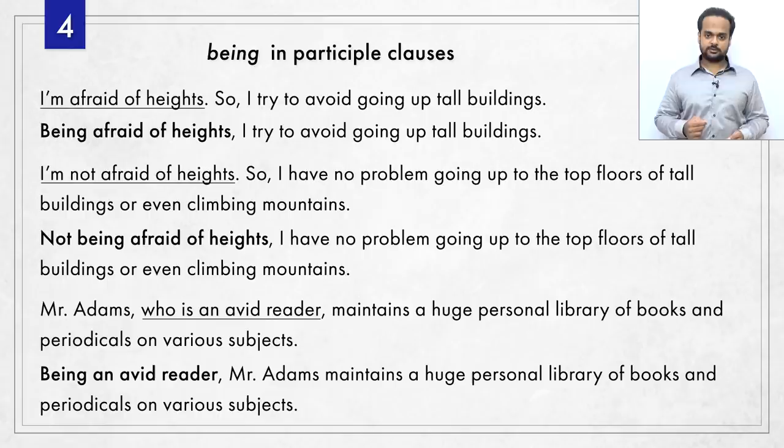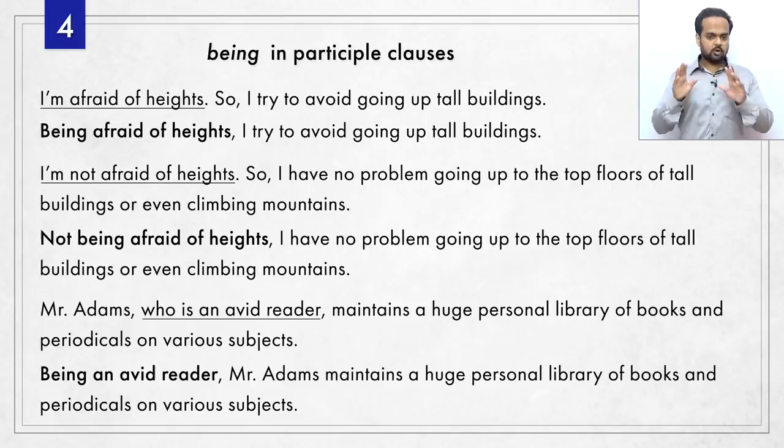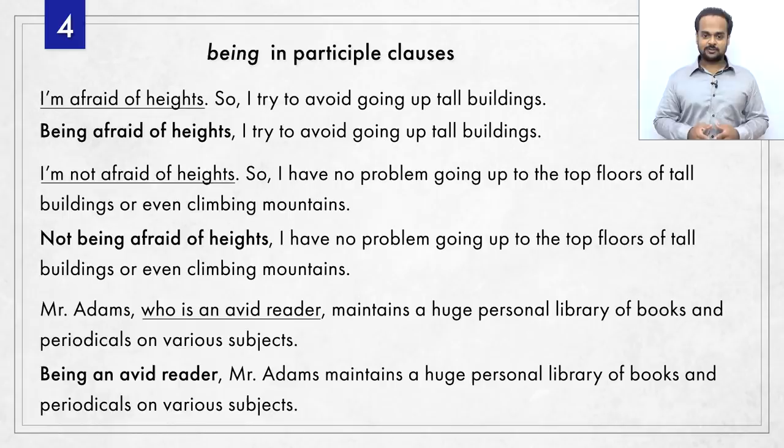Notice how the relative clause with 'who' interrupts the sentence to give information about the noun Mr. Adams. In the same way, the participle clause with being comes in the middle of the sentence and gives information. But the advantage is that you can move it to the beginning: being an avid reader, Mr. Adams maintains a huge personal library. You might wonder whether you can move 'being afraid of heights' to the middle — you can say 'I, being afraid of heights, try to avoid tall buildings,' but it doesn't sound very natural in that case. So let's leave it. If you're ready, let's now do some practice exercises.